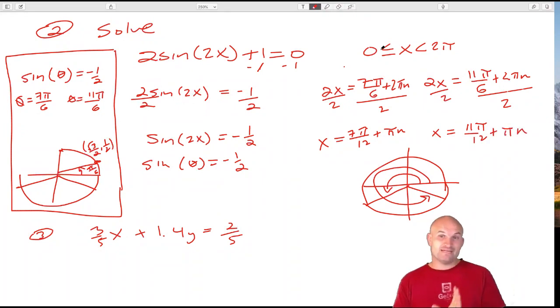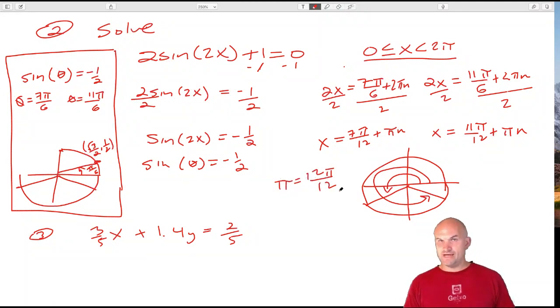Now again, our answers need to be, now we need to go back to our restriction. So we're only going to write down the answers that are between 0 and 2π. So again, we're adding π. Well, in terms of 12, π is the same thing as 12π/12. So basically, I'm going to take 7π/12, and I'm going to keep on adding 12π until I can't get more than 2π. So then we need to say, well, what is 2π? Well, 2π is 24π/12. So let's just start with our first answer, 7π/12.